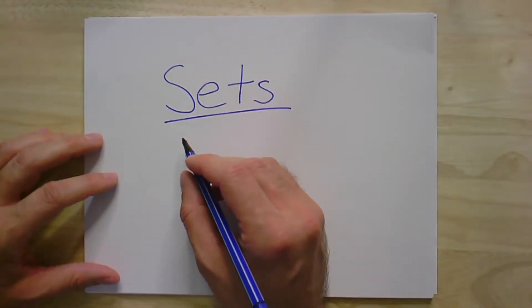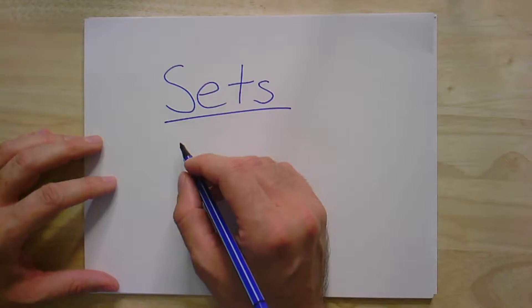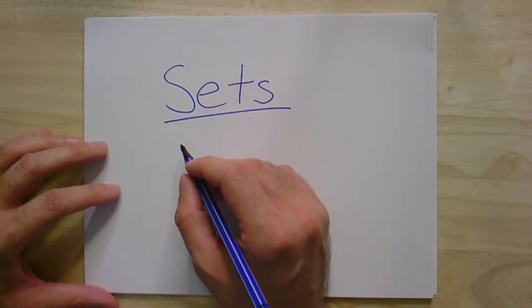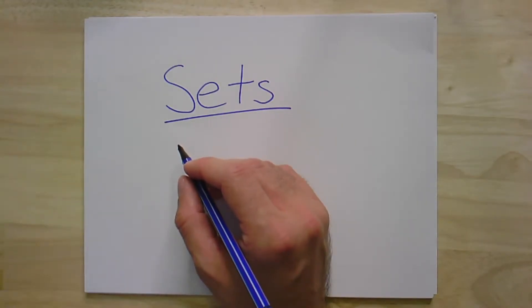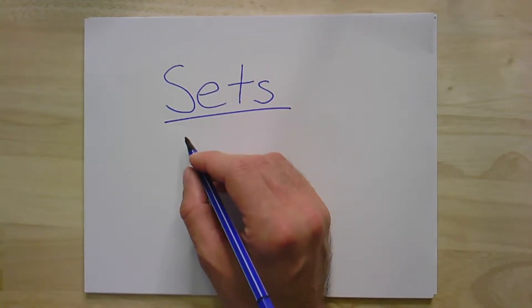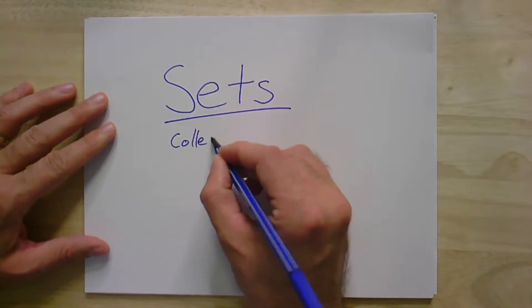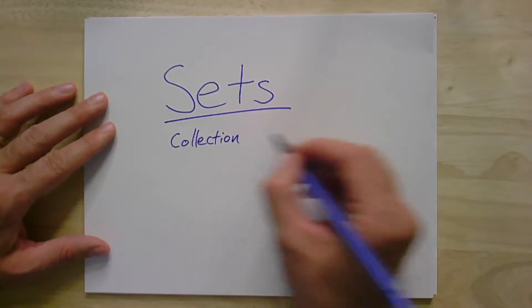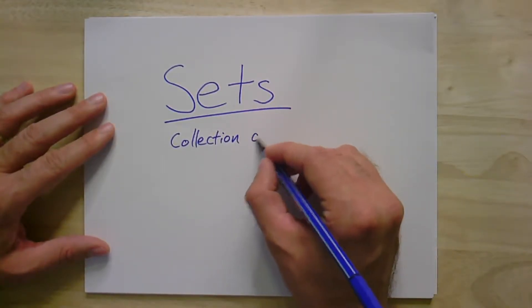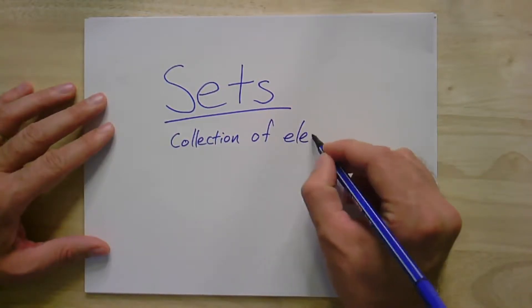Everything that we work with in math, usually at some point, involves a set. And this is certainly true for graph theory, and you may have seen definitions of sets which are really kind of informal, and we're going to use something semi-formal as well, which is sort of a collection of elements, a bunch of things.